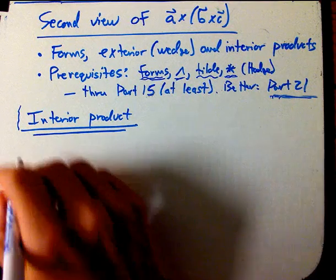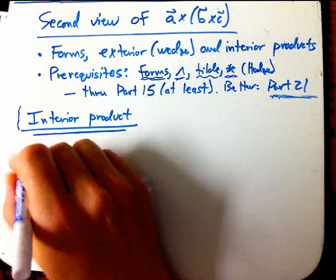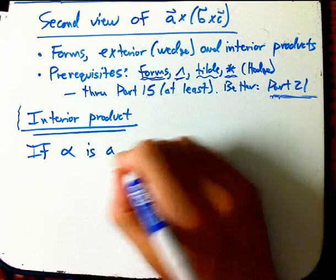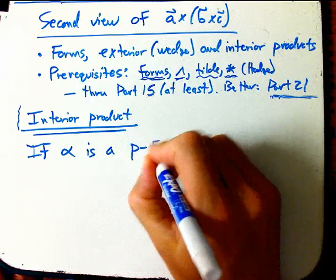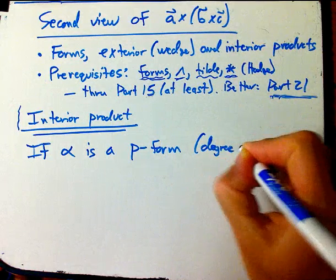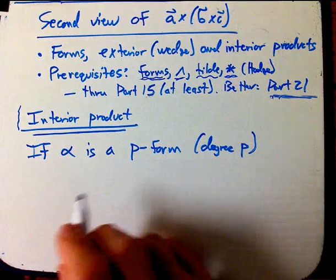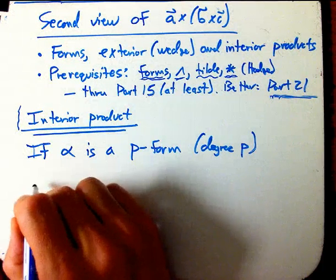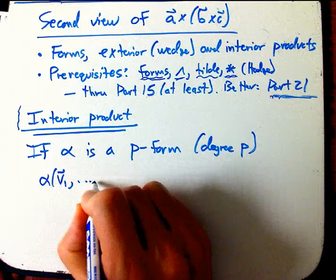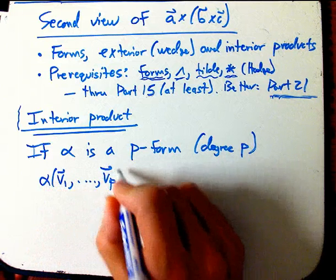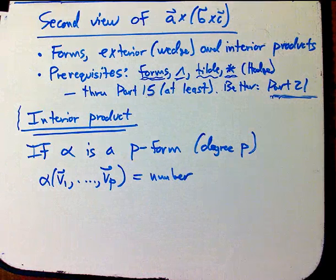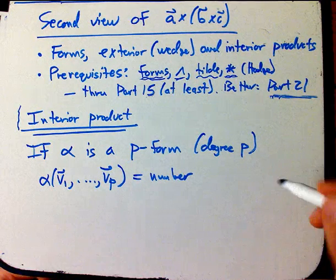And the main thing is that the definition, or one of the ways of defining, not the only way, if alpha is a p-form, a differential form of degree p, then it is a machine, it's a linear machine that eats p different vectors and gives you a number, a real number. You can do it with complexes and stuff, but we're not going to do that.